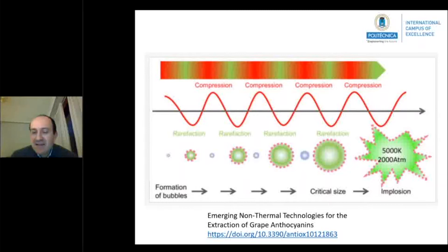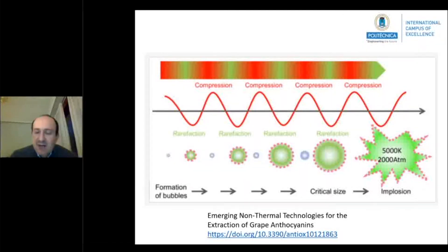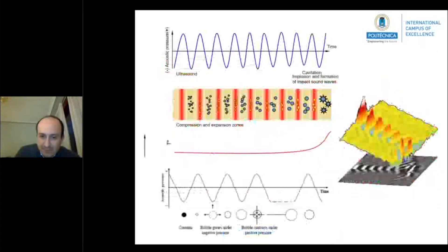The implosion produces high temperatures that can reach 5000 Kelvin degrees at the nanoscale, and also pressures that can reach 2000 atmospheres.